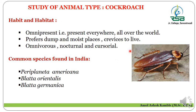First of all, we are going to discuss the habit and habitat of the cockroach. It is omnipresent, meaning it is present everywhere all over the world. It prefers places which are damp and moist in nature. It is omnivorous — it does not eat only plants or only animals, but both.